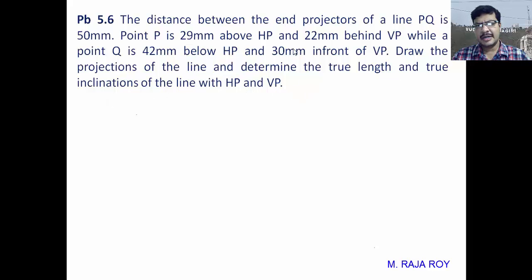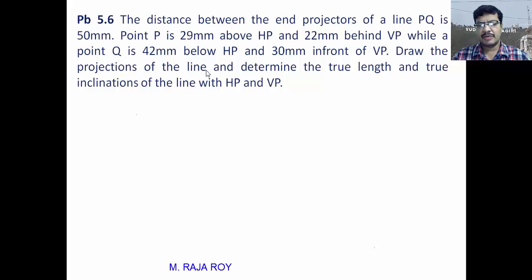This is an indirect problem. The true length of the line is not given — you have to find it. The two inclinations are also not given — you have to find those as well. However, the positions of the final front view and final top view are given in this problem.